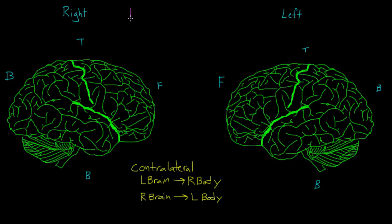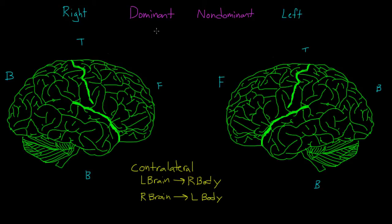Another interesting thing to note is that we actually have a dominant hemisphere, meaning that we also have a non-dominant one. And because we know that the brain communicates contralaterally with the body, the dominant hemisphere is typically the one that's opposite of the hand that we write with. So people who are right-handed have a tendency to be left-brained and vice versa. But because being right-handed is so dominant, this means that the left hemisphere is the dominant hemisphere for the vast majority of people. Although handedness is the easiest way to identify our dominant hemisphere, the dominant hemisphere is actually responsible for a lot more than that. One thing that we find in the dominant hemisphere, which is typically the left hemisphere, is language.